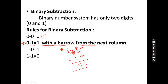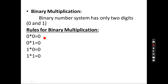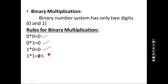Next, the binary multiplication rules are very simple. Any number multiplied by 0 always gives 0. So: 0 × 0 = 0; 0 × 1 = 0; 1 × 0 = 0. And 1 × 1 = 1. So only when you multiply 1 by 1 do you get 1 — all other combinations give 0. Please remember these important rules.